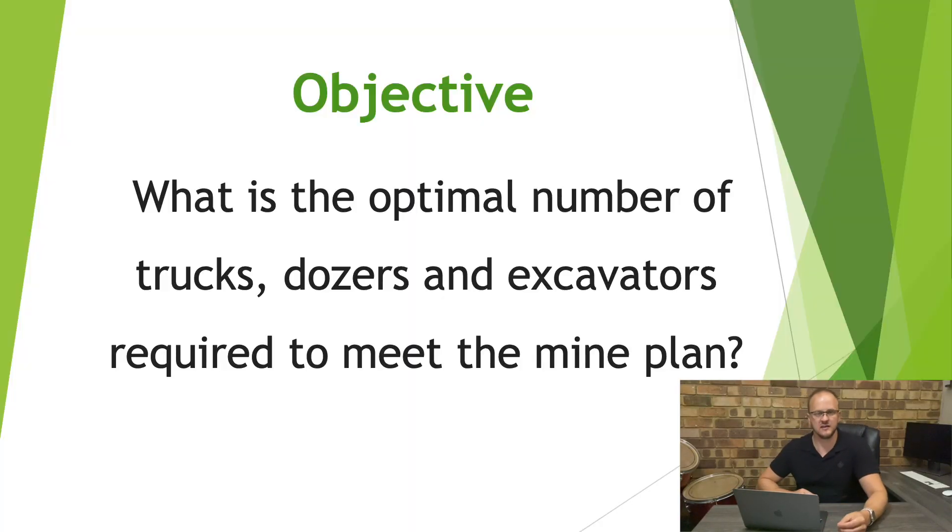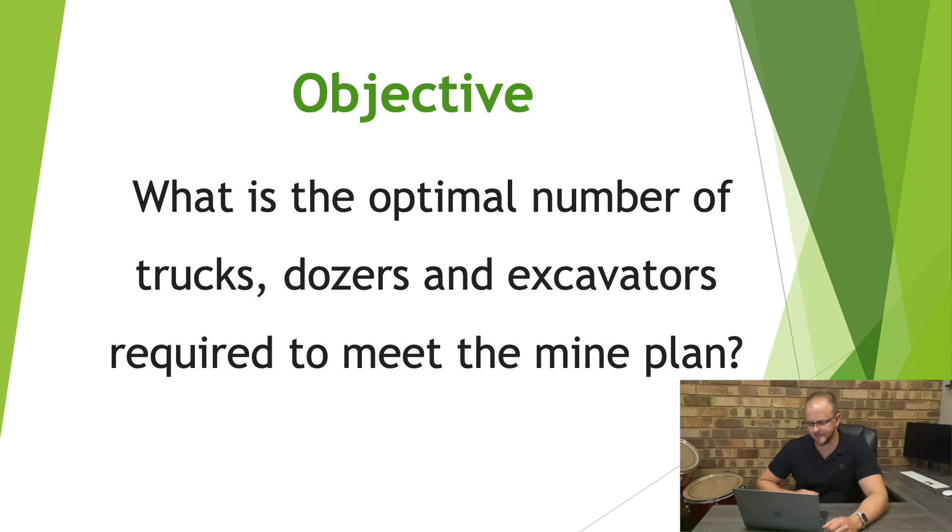Now that we've seen the simulation is working as expected, we're going to try and answer a very difficult question. We want to determine the number of trucks and dozers required to meet the mine plan, and subsequently the right amount of excavators. The mine plan is based on the output capacity of the processing plant, which is currently the bottleneck. We don't want too many or too few trucks and dozers — we don't want to starve the plant, but we also don't want unnecessary buffer to build up in front of it. So the question is: what is the optimum number?